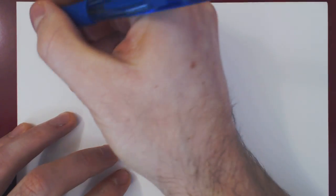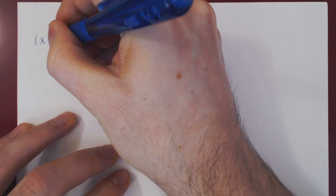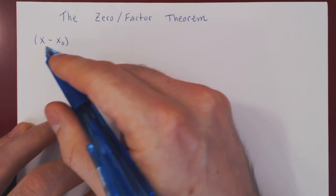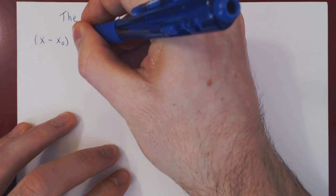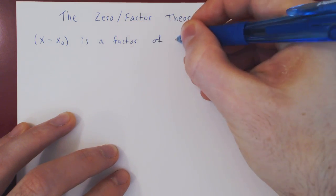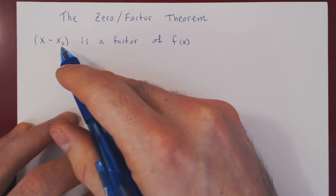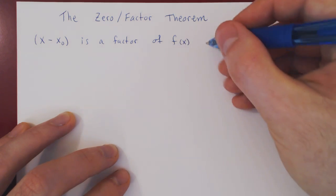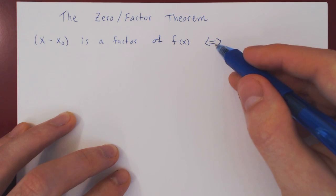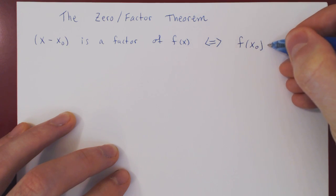Suppose that f is a polynomial and x₀ is a real number. We have the linear factor x minus x₀ — x₀ could be 5, minus 7, root 2, it doesn't matter. x minus this value is a factor of our polynomial f of x, if and only if f of x₀ is equal to zero.